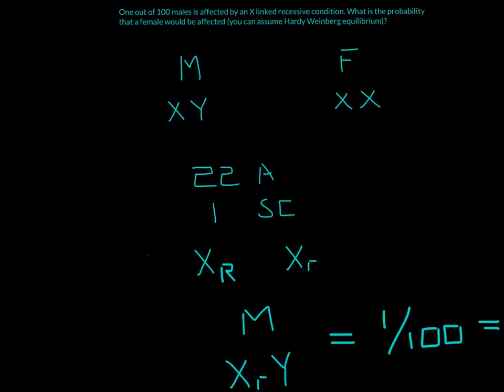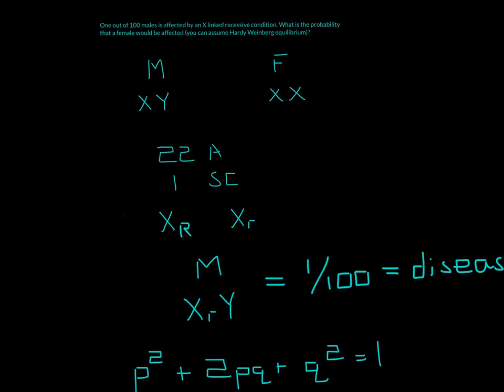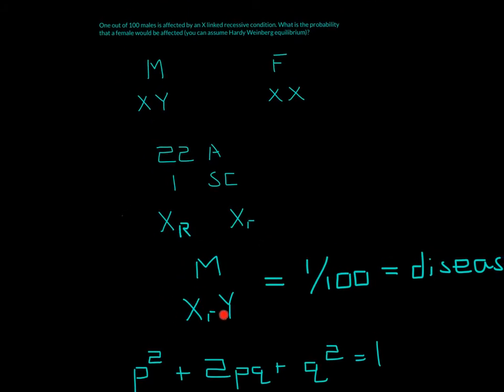So for this, all it's saying is that we have two different types of X alleles. So we have an X dominant and an X recessive. And this is saying it's X-linked recessive. So the male has the recessive allele, and then it's giving us one out of 100.